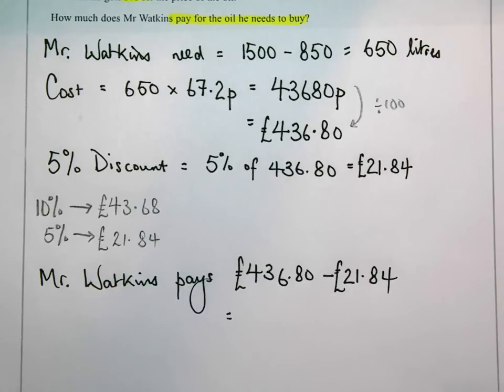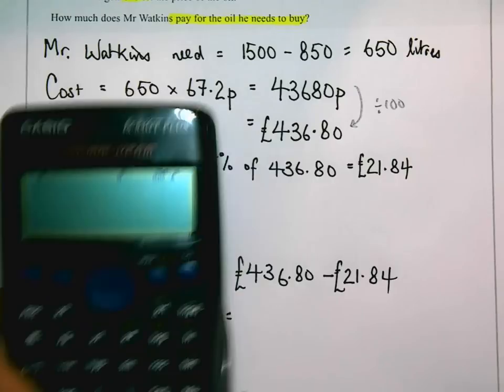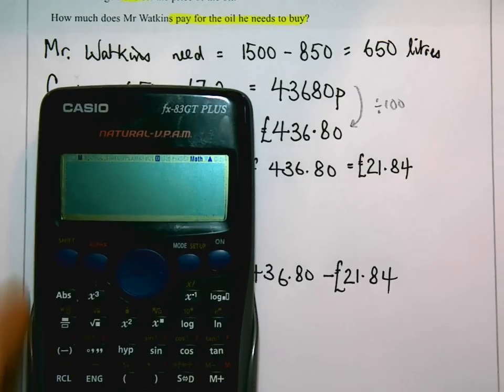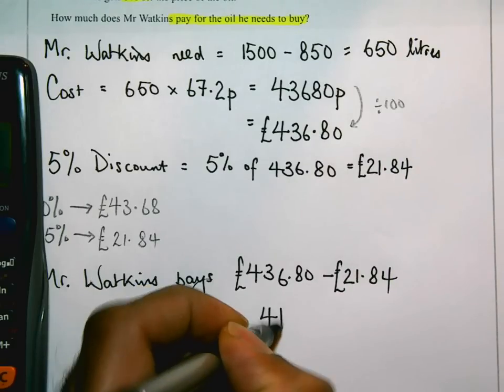And again, go back to the calculator. Let it do all the hard work. 436.80 take away 21.84 equals 414 pounds 96. 414 pounds 96.